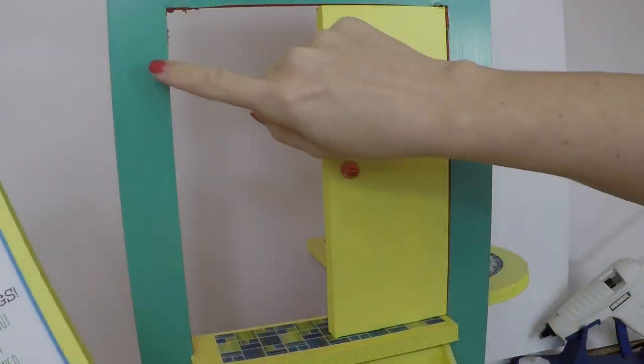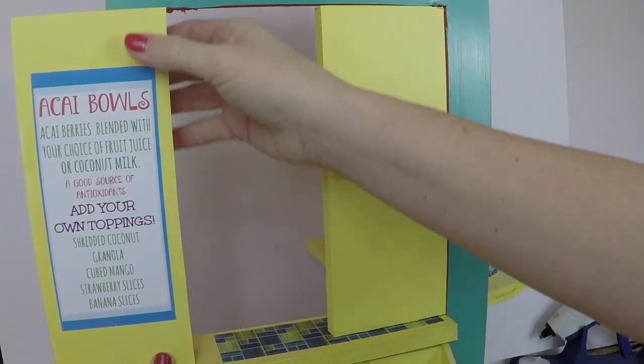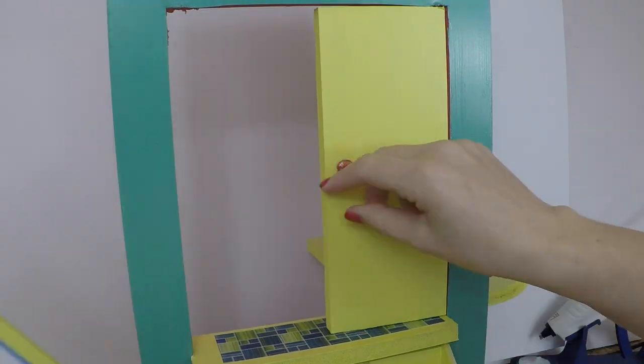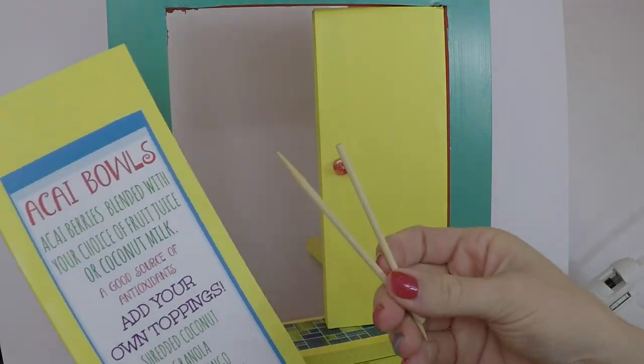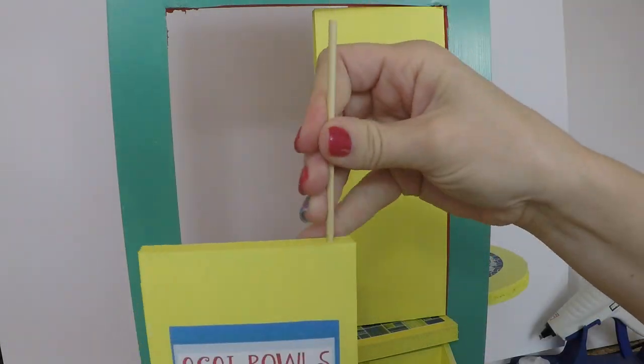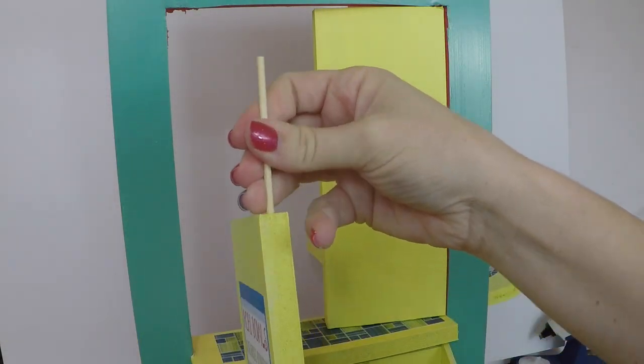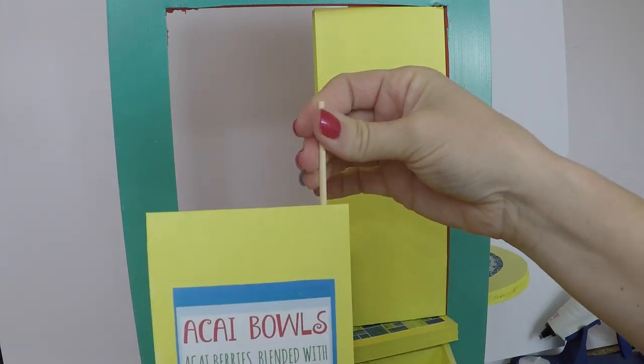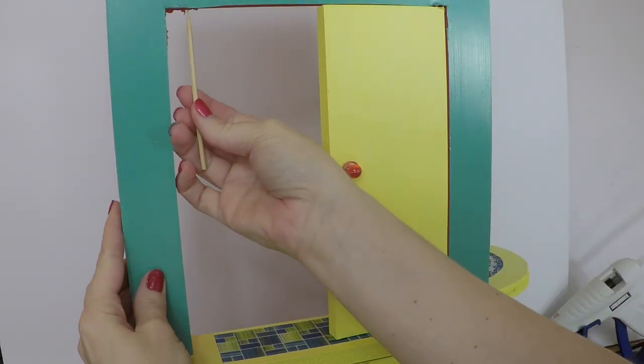Now there's two ways you can do the doors. You can just hot glue them on the front of the fruit stand so they're always open, or you can add little toothpicks or barbecue skewers in them so they open and close. Make sure to push them down straight into the door so they don't pop out the side.